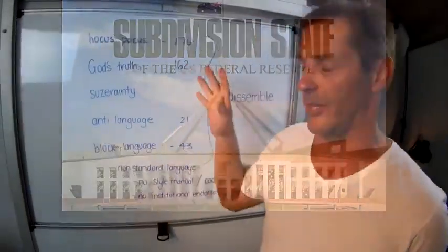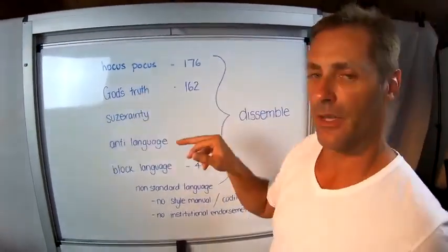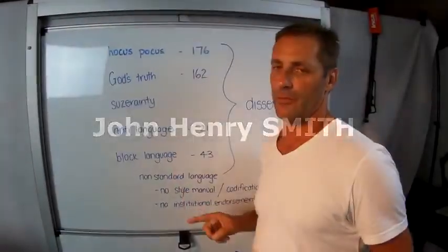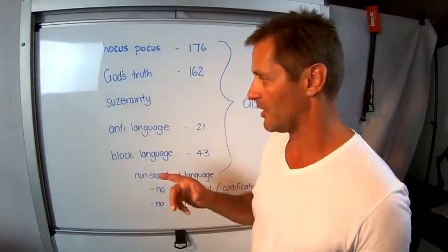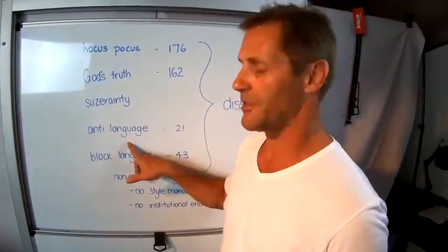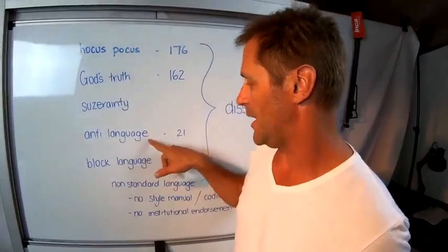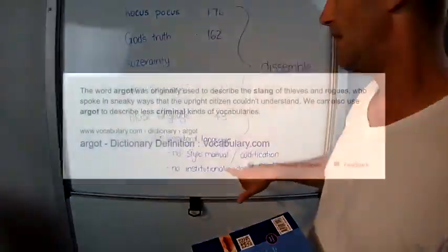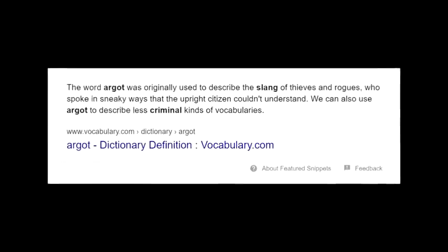Hocus pocus is the mixture of the all capitals and the English. That is an anti-language. If they use this anti-language against you and you don't have your birth certificate, you have your form of information or your certificate of birth, you've got the proper document. When they use the anti-language, this becomes a criminal argot - that's in here as well. An anti-language, once again, has no styles manual, no codification, no institutional endorsement.